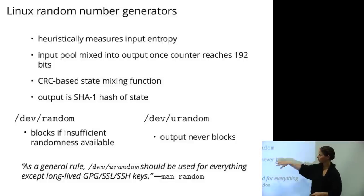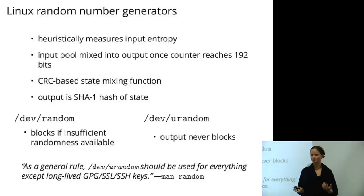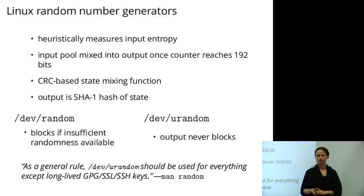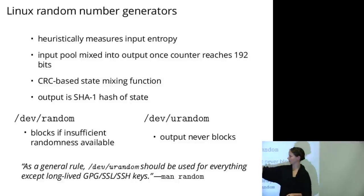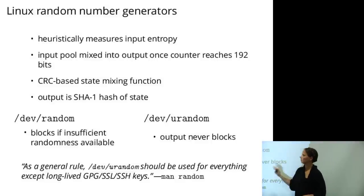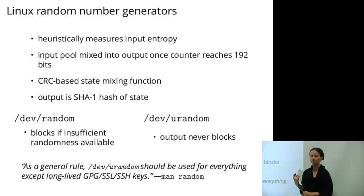Linux provides two interfaces. /dev/random tries to guarantee strong randomness — it only provides as much output as it has measured input entropy, and will block and wait for additional inputs if more output is requested than entropy available. /dev/urandom, because this is stronger than needed for most uses, never blocks — it gives you the continuously-updating SHA-1 hash of the state for as many outputs as you want.